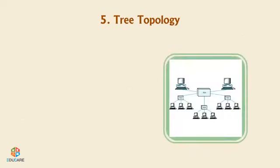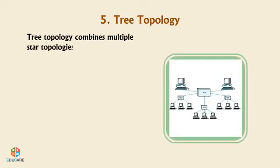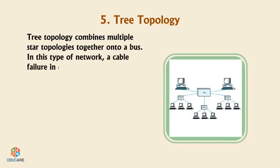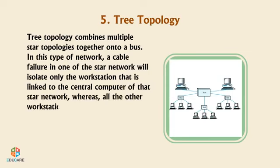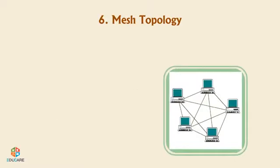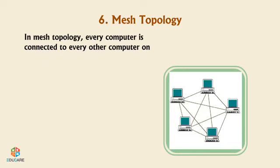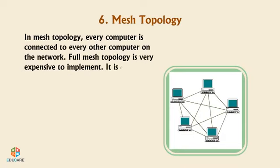Tree Topology: Tree topology combines multiple star topologies together onto a bus. A cable failure in one of the star networks will isolate only the workstation linked to the central computer of that star network, whereas all other workstations continue to function normally. Mesh Topology: In mesh topology, every computer is connected to every other computer on the network. Full mesh topology is very expensive to implement and is commonly used in wireless networks.